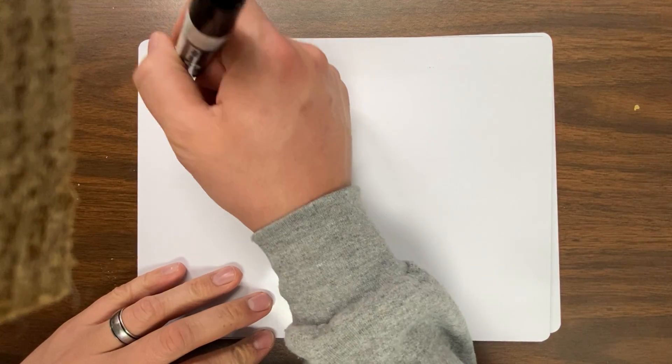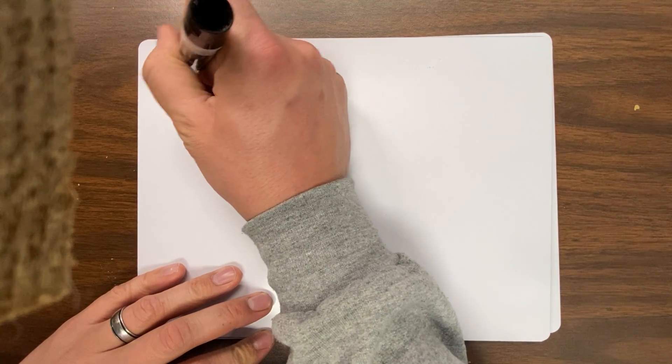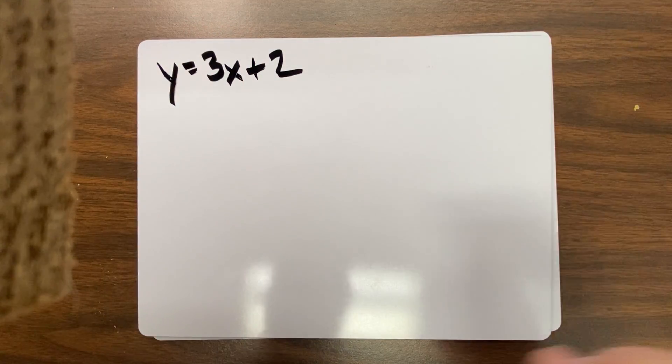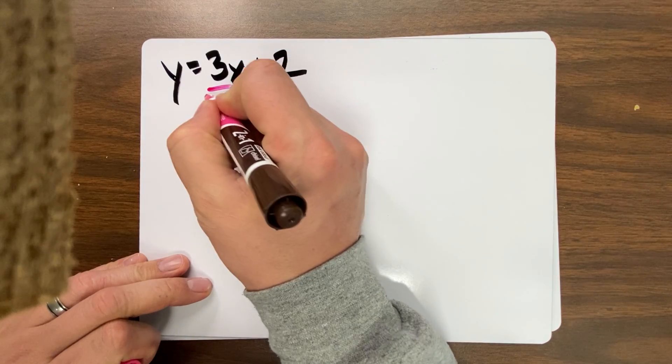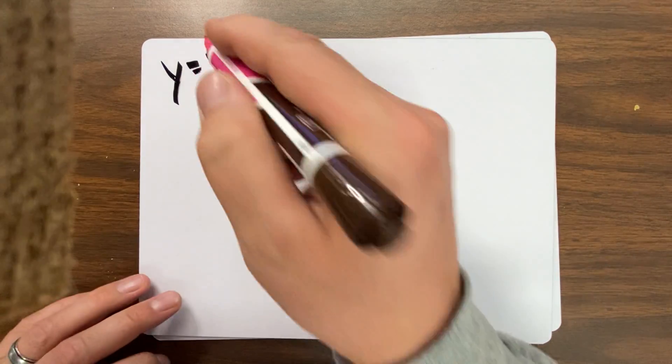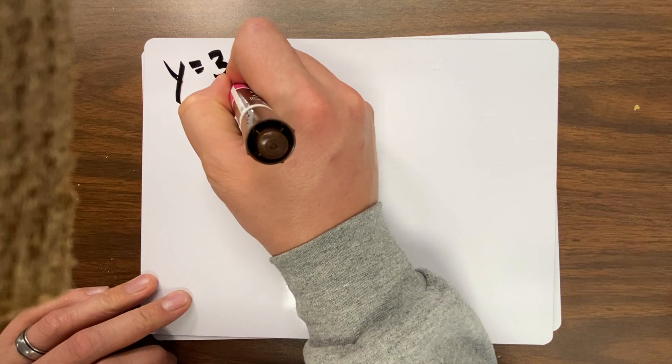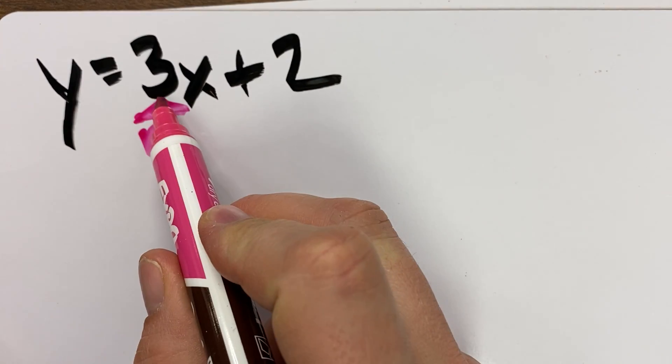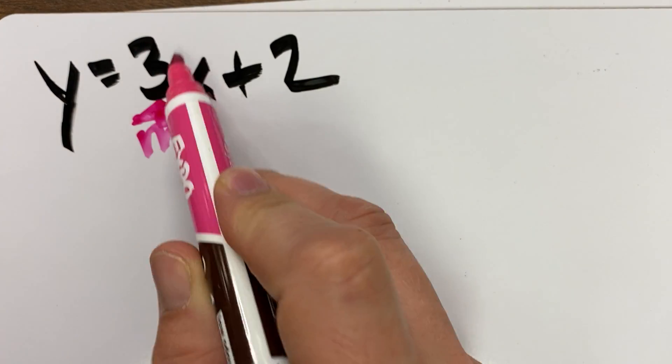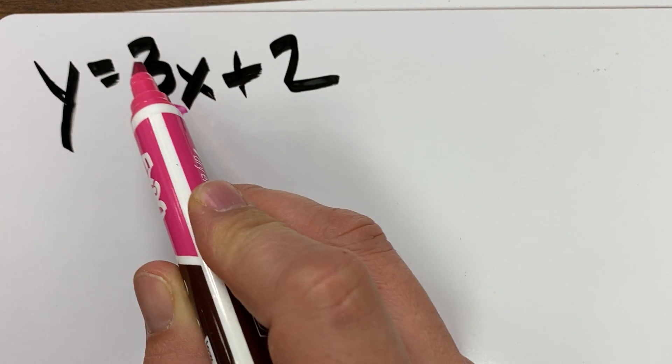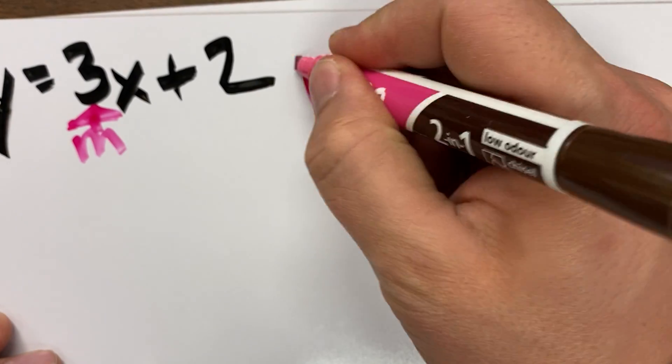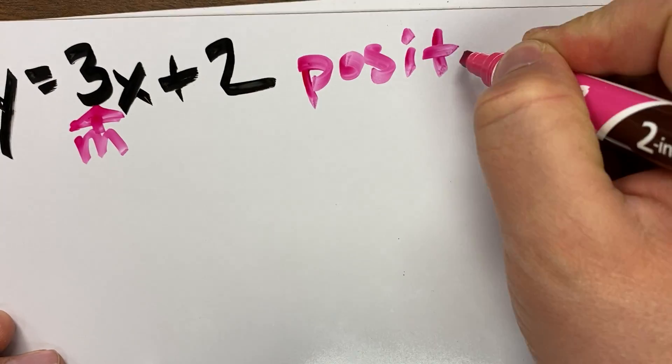So the one we've already been talking about, we just probably haven't realized it, is y equals 3x plus 2 let's say. And the slope is always m which is right there. That's my slope. Slope is always the number or numbers in front of x. Now this is a 3 and technically it's positive, because there's no negative in front of it or anything. So the slope is just positive 3.